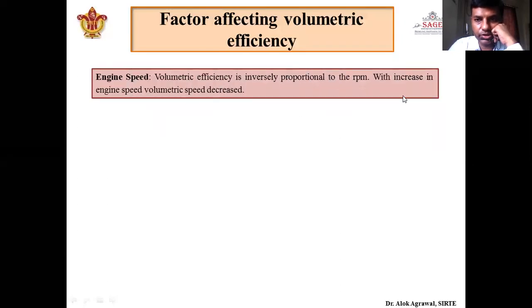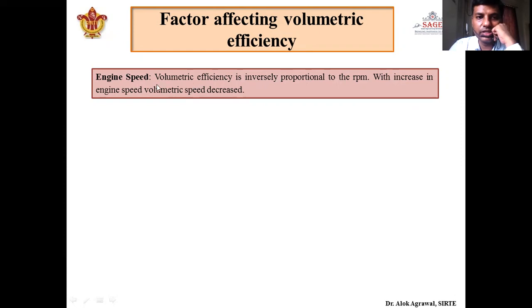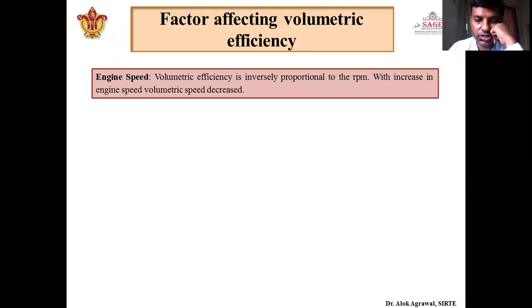First is engine speed. Volumetric efficiency is inversely proportional to RPM, meaning that when engine speed increases, volumetric efficiency will decrease. This is because when engine speed increases, there is less time for charge to come inside the combustion chamber as the suction stroke occurs very rapidly. Because of that, less time is available for the intake stroke, so less volume of air and fuel mixture is getting inside the combustion chamber. Hence, with increase in engine speed, volumetric efficiency decreases.